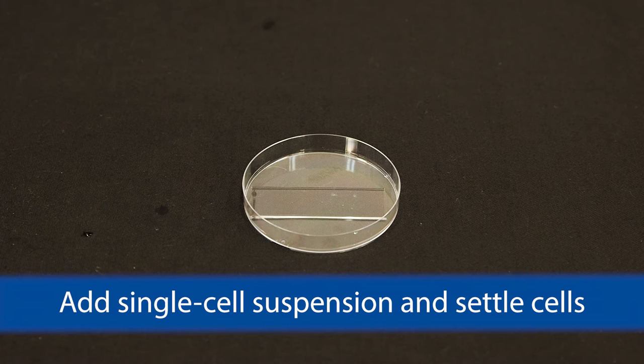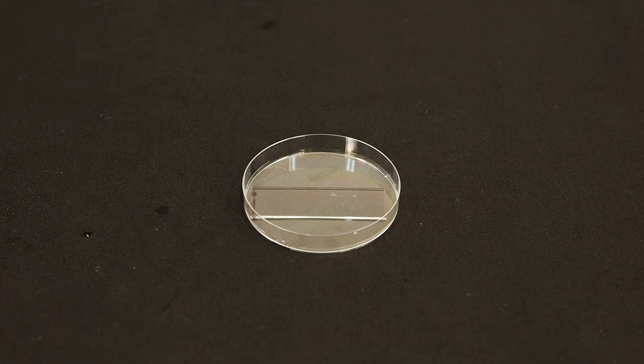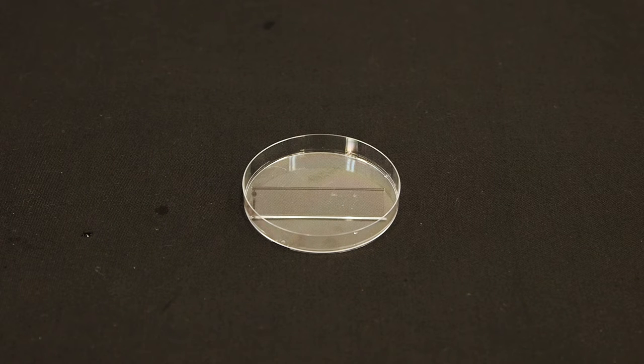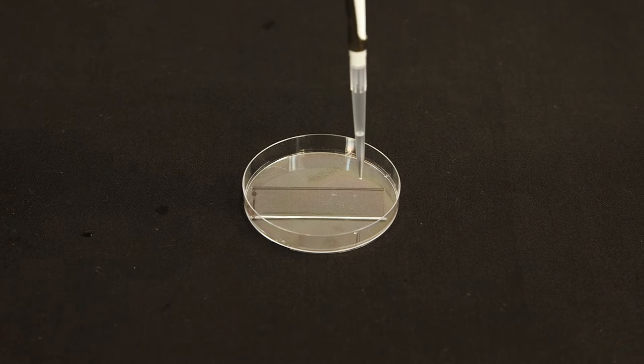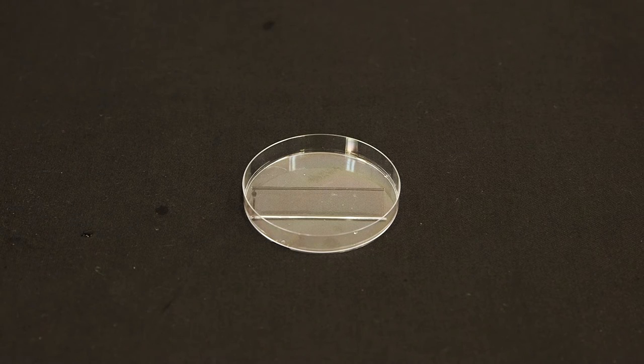After you have prepared your single cell suspension of 10,000 to 100,000 cells in a total volume of 1 milliliter, pipette it directly onto the surface of the gel using a back-and-forth motion to ensure that the chip is evenly covered.